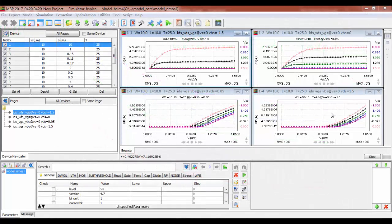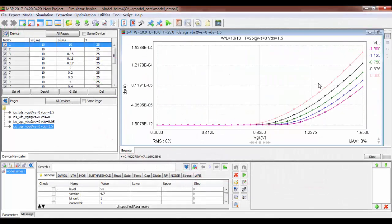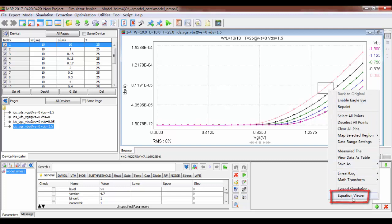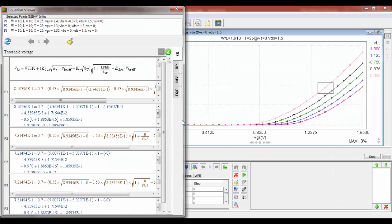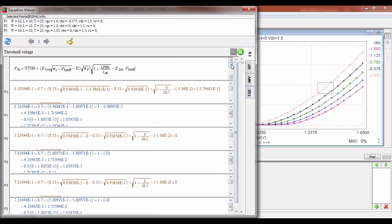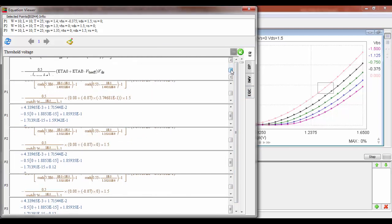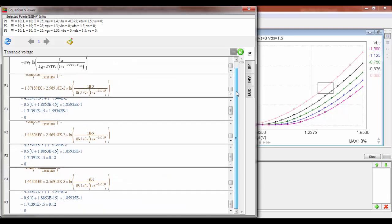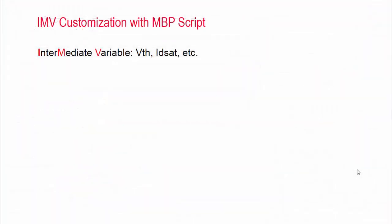The Equation Viewer tool in MBP can help you debug model issues and thereby improve model quality. For example, by looking at the equation for VTH, now we have a better understanding how VTH is calculated for the selected operating points.